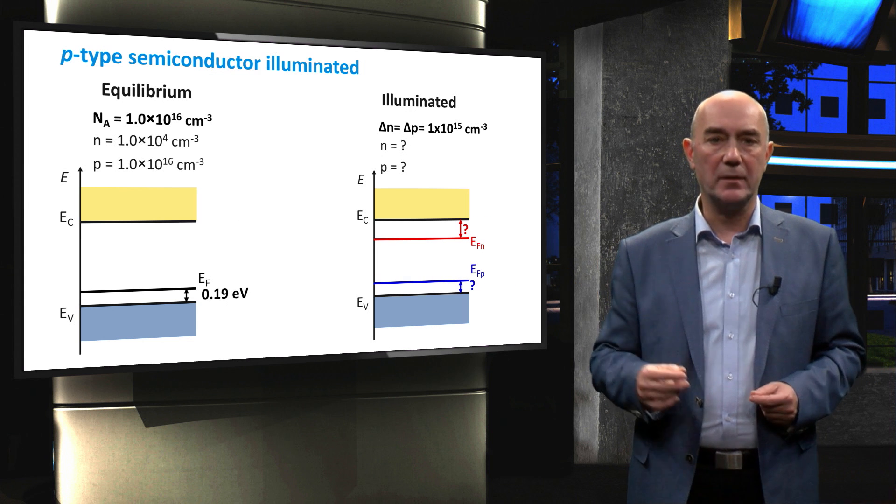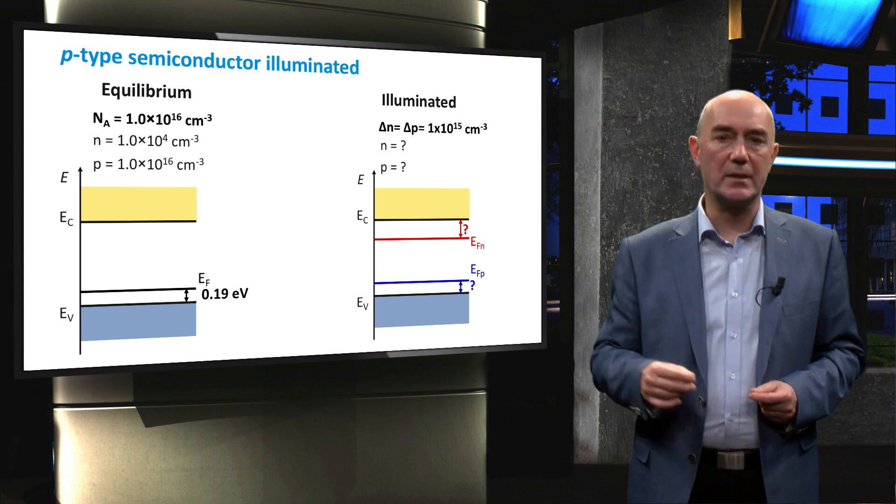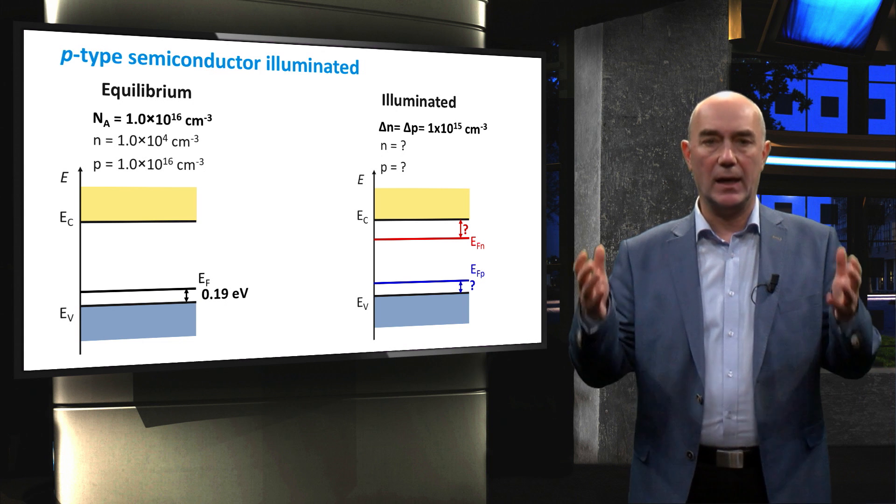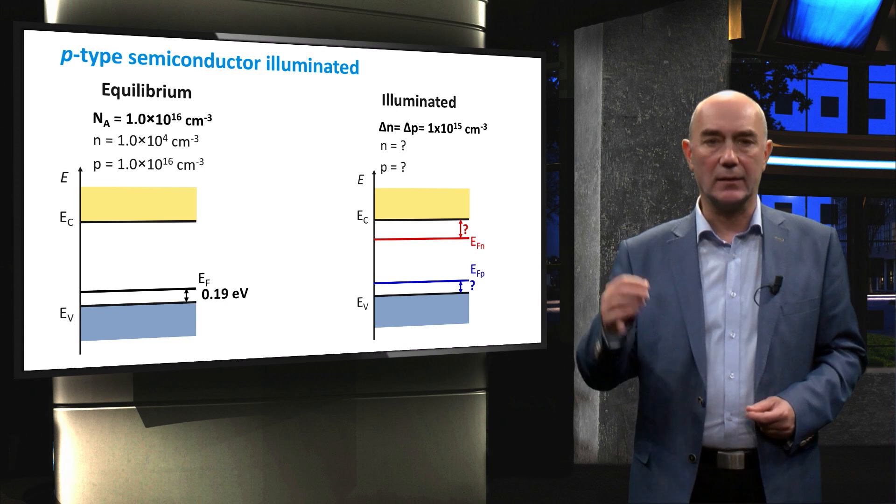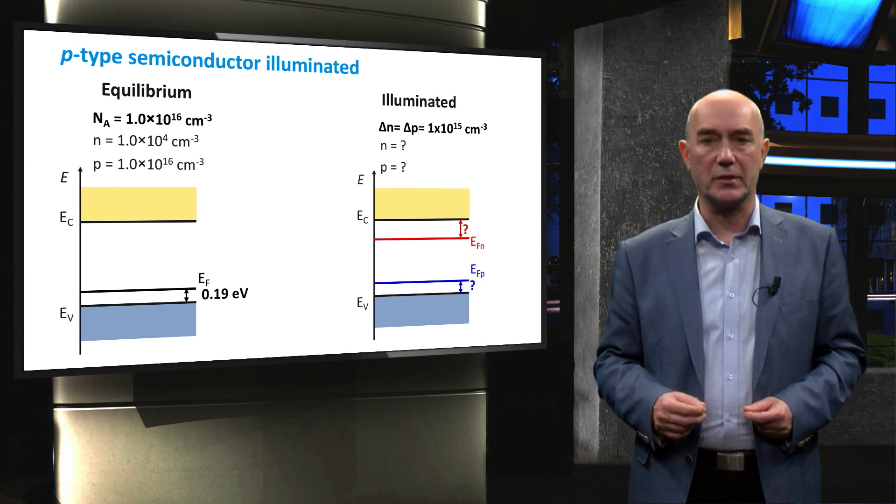The same behavior will occur for P-type semiconductor materials, and I invite you to calculate the quasi-Fermi level positions. In this video, you have learned about quasi-Fermi levels under non-equilibrium conditions in a semiconductor. In the next video, we will discuss how charge carriers move through a semiconductor, introducing different transport mechanisms.